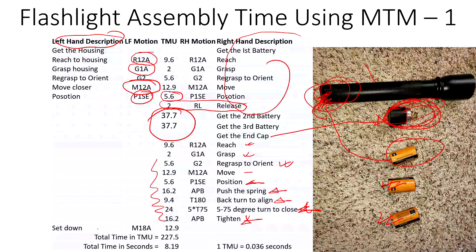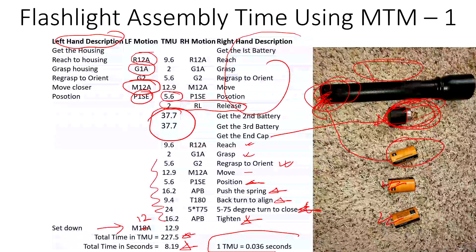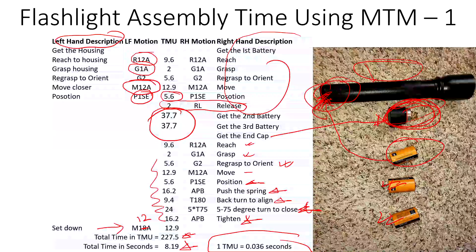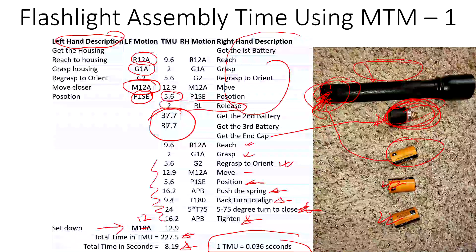Finally, we add all the TMU values — there's a typo, that should be 12 inches for setting it down. After assembly, the total TMU and total seconds are calculated: 1 TMU equals 0.036 seconds. I hope this explains MTM System 1. In the next video I will explain the same example using MTM System 2, the Most Time Measurement system.